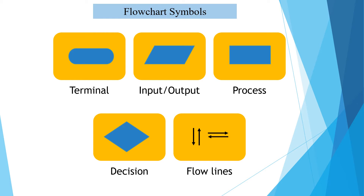After that, the next symbol, which is a diamond, is called decision. It indicates a condition and two or more alternatives. The condition is like: if n is greater than 0, you have two alternatives — either it is true or it is false. If it is true, then what? And if it is false, then what? This decision making is done using this symbol, that is why it is named decision.